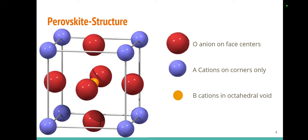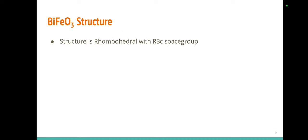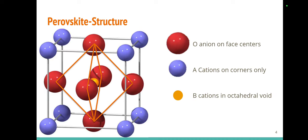The structure of perovskite can be seen here. Oxygen anions are placed at face-centered positions, and there are two varieties of cations. One cation takes the corner positions, and the other cation takes the octahedral void position. The B cation is surrounded by the octahedron made by the oxygen anions, and this octahedron is actually responsible for the electrical properties.